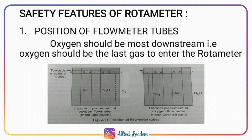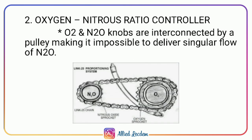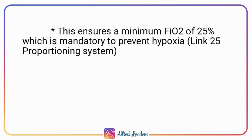Nitrous oxide, when administered alone without oxygen, is toxic to the patient causing serious complications. Therefore, the oxygen and nitrous oxide knobs are interconnected by a pulley, making it impossible to deliver a singular flow of nitrous oxide. This system is called the Link-25 proportioning system. When nitrous oxide is turned, the pulley automatically rotates the oxygen knob, ensuring a minimum fraction of inspired oxygen of 25%, which is mandatory to prevent hypoxia.